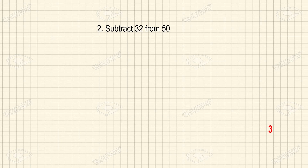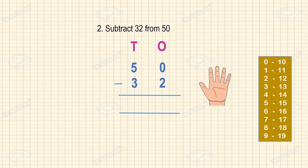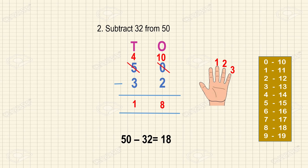Next we will see what happens when a number ends with 0. Subtract 32 from 50. Write the place values and numbers from the right side. Ones place: 0 minus 2 — we cannot take any number away from 0. So we borrow from the tens place. The 0 becomes 10 and the 5 becomes 4. So 10 minus 2 is 8. Then tens place: keep 4 on our mind — before 4 is 3, 2, 1. So 4 minus 3 is 1. Answer: 50 minus 32 is 18.